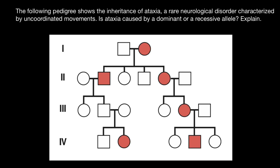Hello and welcome to Nikolai's Genetics Lessons and the problem of the day. The following pedigree shows the inheritance of ataxia, a rare neurological disorder characterized by uncoordinated movements. Is ataxia caused by a dominant or recessive allele? Explain.